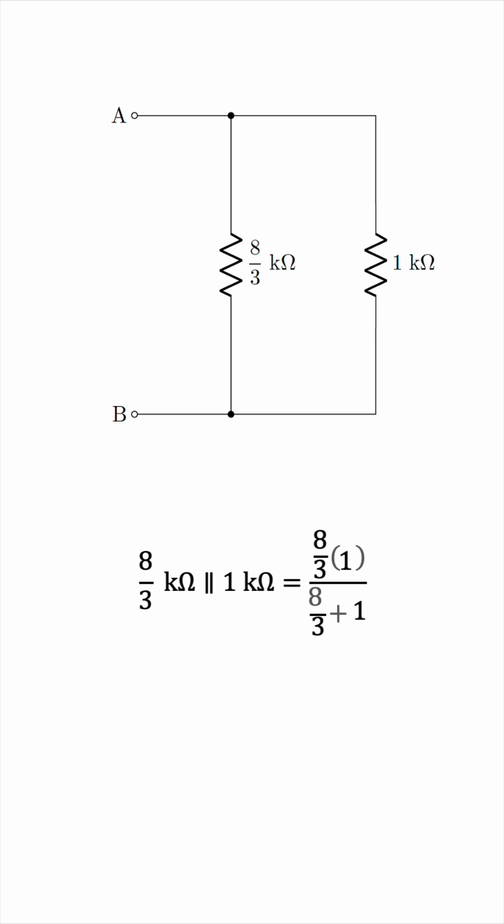which gives us 8 thirds over 11 thirds, and that simplifies to 8 over 11, which is approximately 0.727 kilo ohms, or 727 ohms.